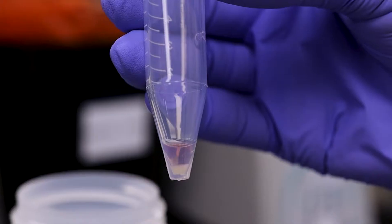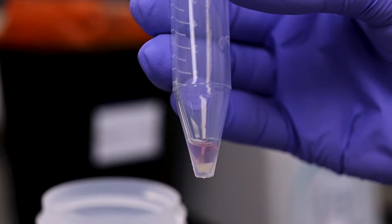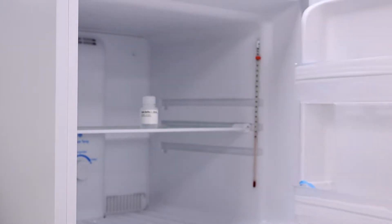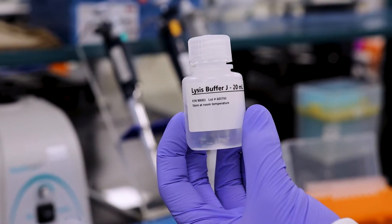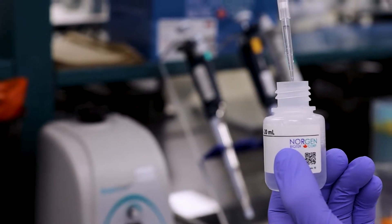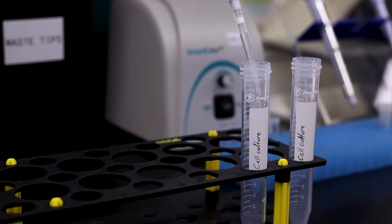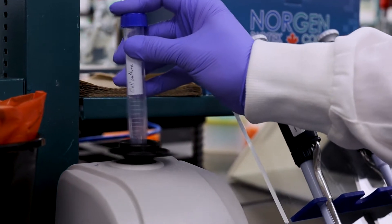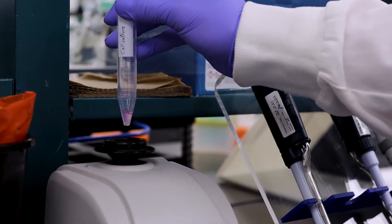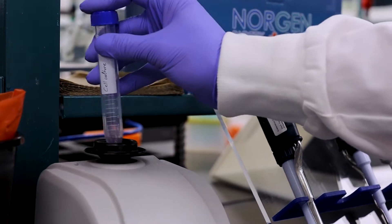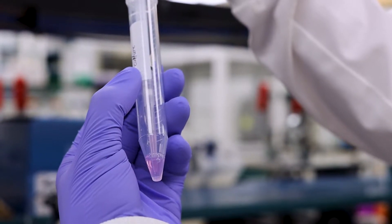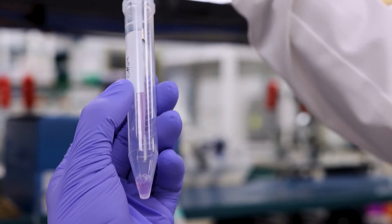A few microliters of media may be left behind with the pellet to ensure it is not dislodged. Add 200 microliters of ice-cold Lysis Buffer J to the pellet. Lyse cells by vortexing for 15 seconds. Ensure that the pellet is completely dissolved before proceeding. Using a pipette, transfer the lysate to an RNase-free microcentrifuge tube.